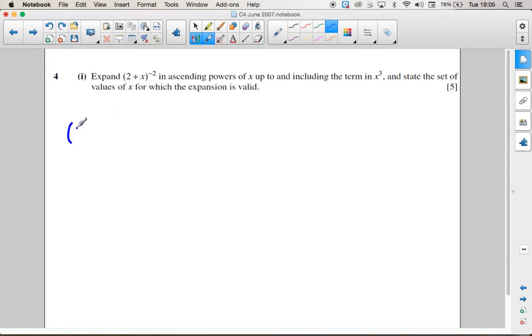It's a binomial expansion. Now, the way they've given us the bracket, we can't expand that straight away. We need to have a 1 here. So in order to get a 1 there, we're going to need to divide what's in the bracket by 2.